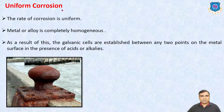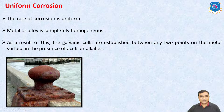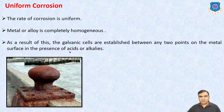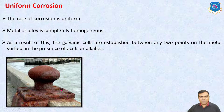First is Uniform Corrosion. The rate of corrosion is uniform. Metal or alloy is completely homogeneous. As a result of this, galvanic cells are established between any two points on the metal surface in the presence of acids or alkalines. In the homogeneous material, throughout the material is eroded — corrosion takes place on the surface. This type of corrosion is known as Uniform Corrosion.